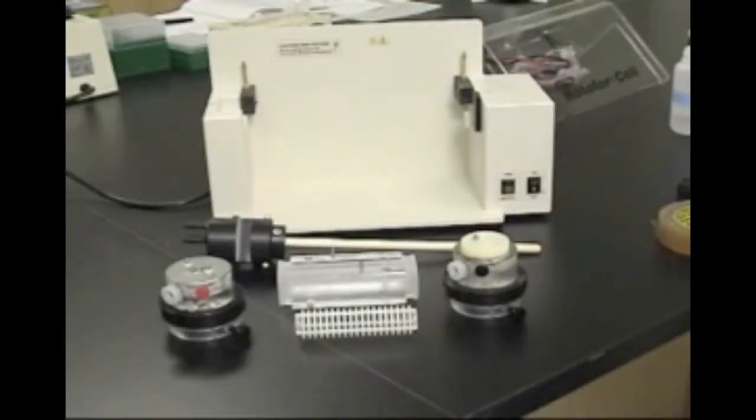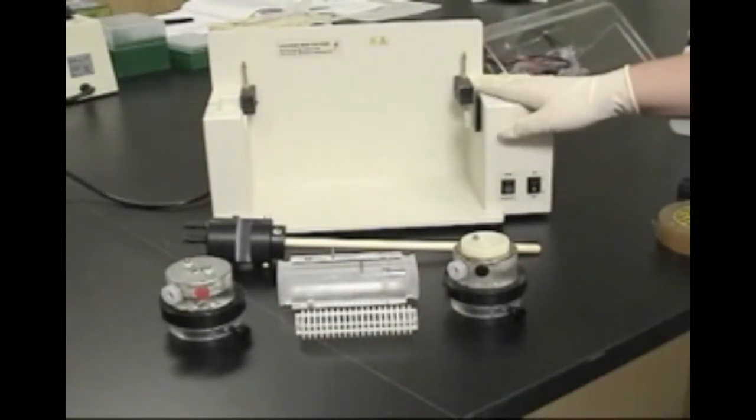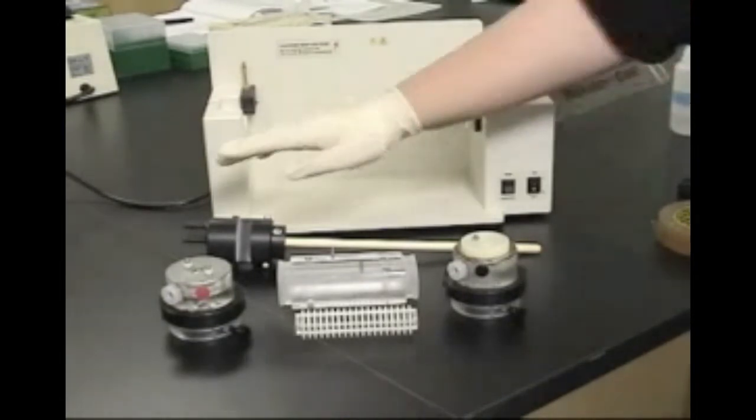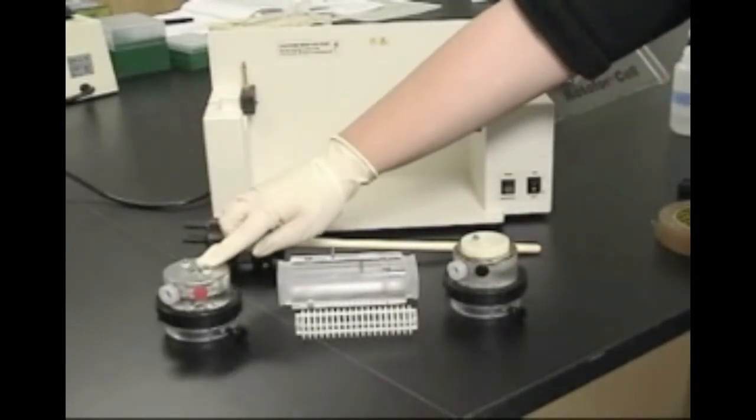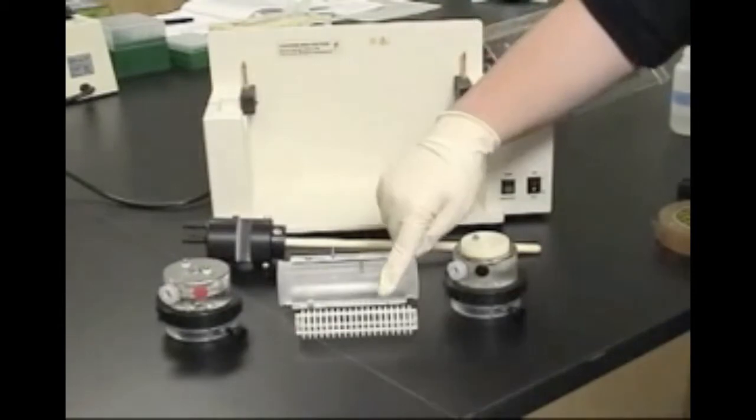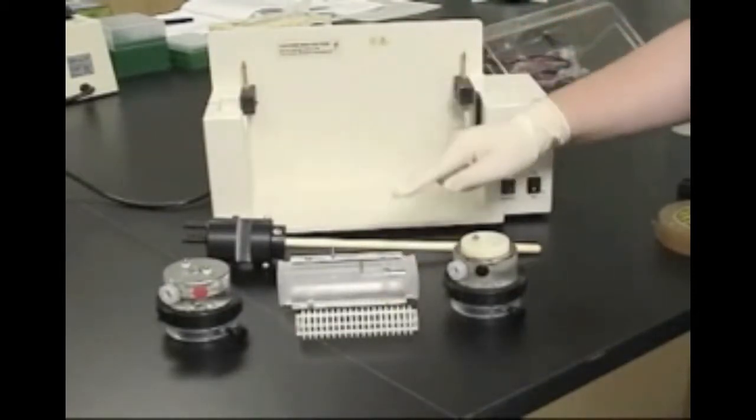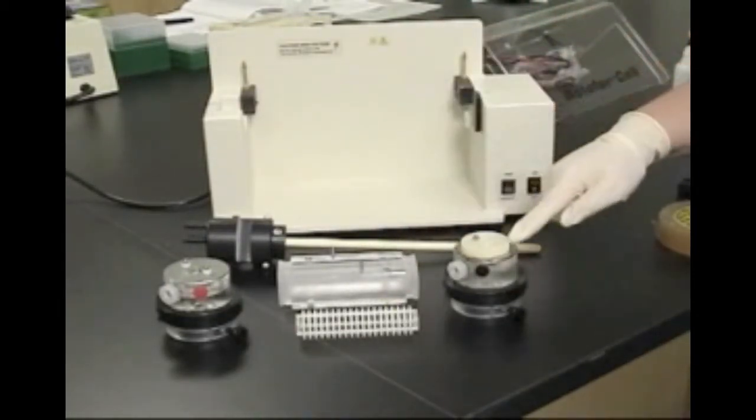Now we will assemble both electrode chambers and the focusing chamber onto the cooling finger and onto the chassis. The anode chamber will be placed first, followed by the membrane core, the focusing chamber, and finally the cathode chamber.